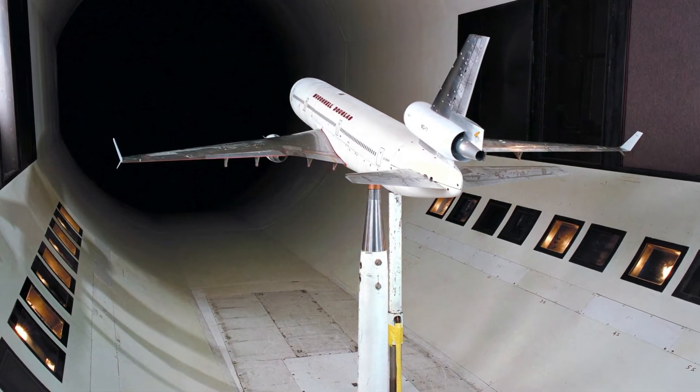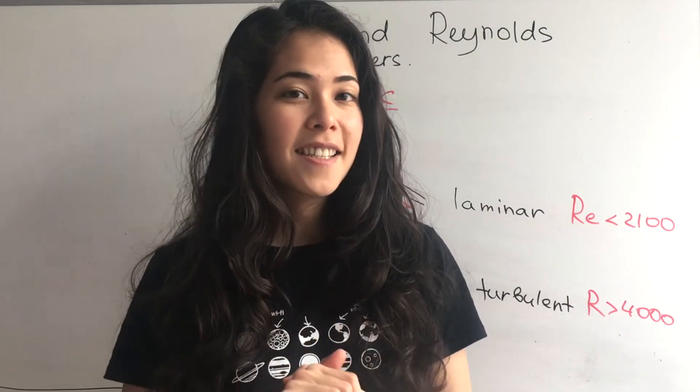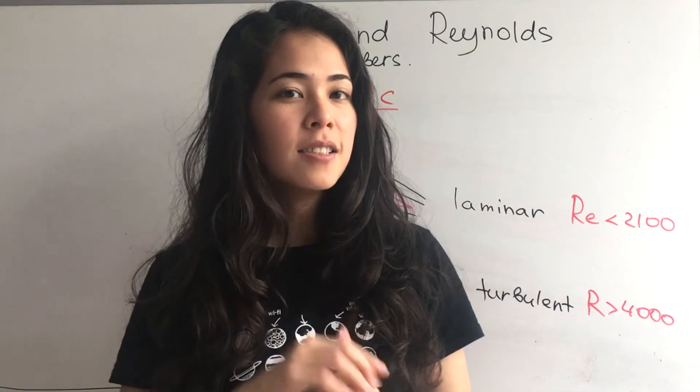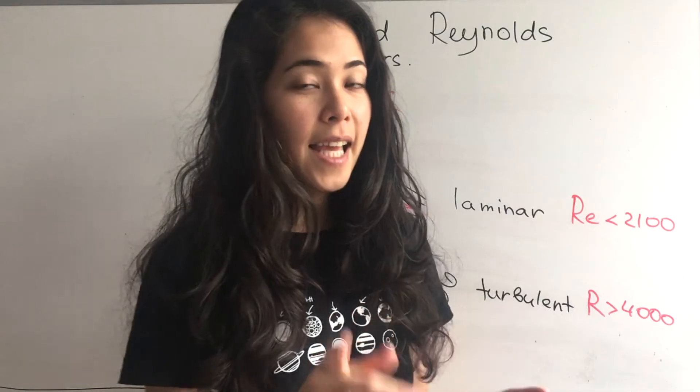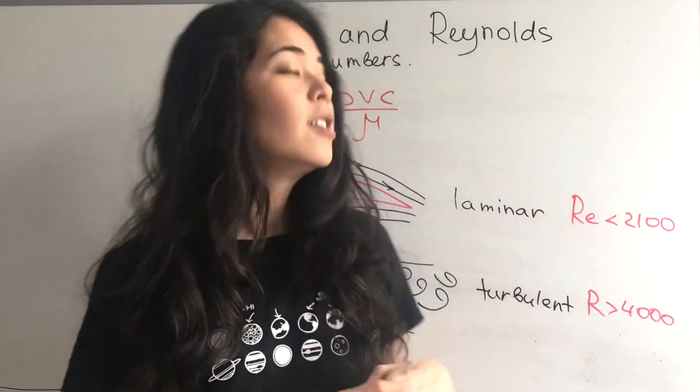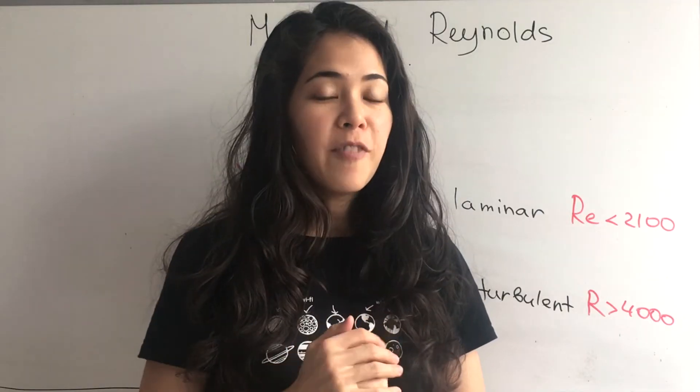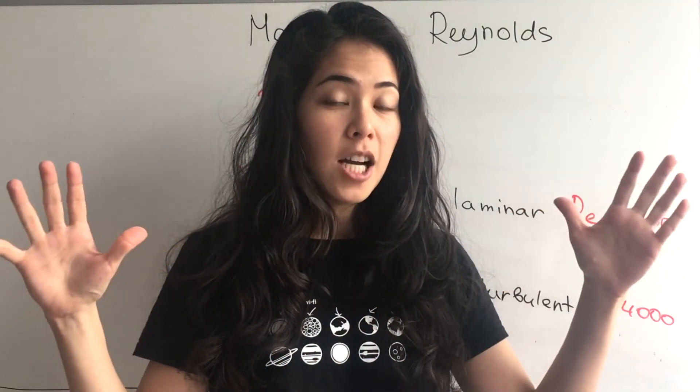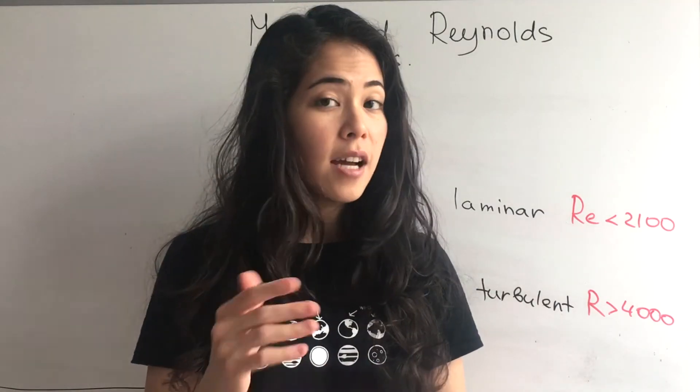So when we test this little model in the wind tunnel, we get out specific properties of that model. And those properties we measure are going to be Mach and Reynolds numbers. So when we finally build the full-size model of that aircraft or rocket, we will still have those numbers.